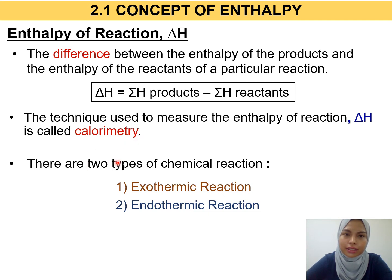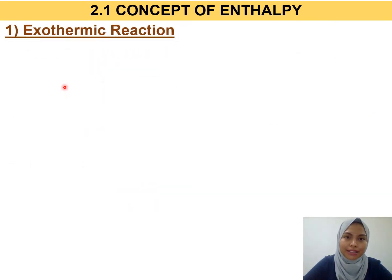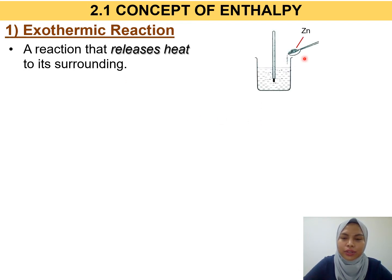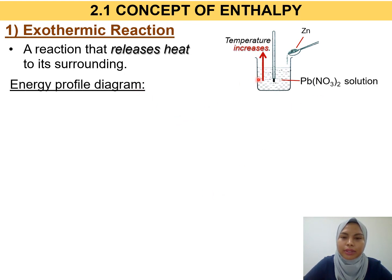There are actually two types of chemical reaction: exothermic reaction and endothermic reaction. From chapter 6, you have already heard about exothermic and endothermic reactions. An exothermic reaction is a reaction that releases heat to its surroundings. For example, if you dissolve zinc in lead nitrate solution, heat will be released to the surrounding, and the temperature will increase.